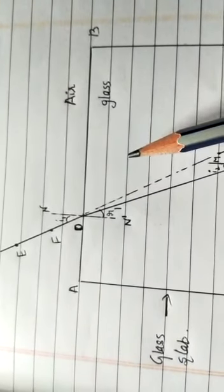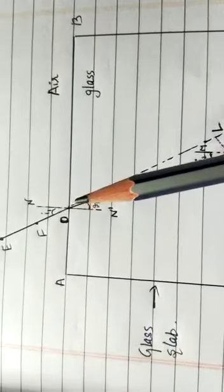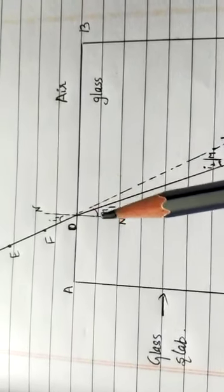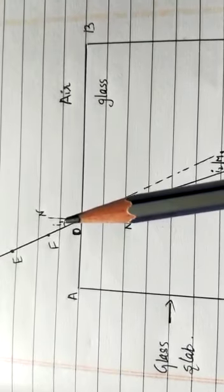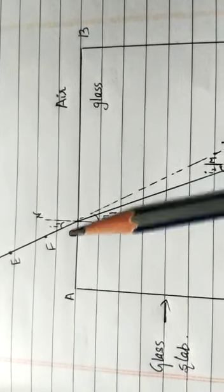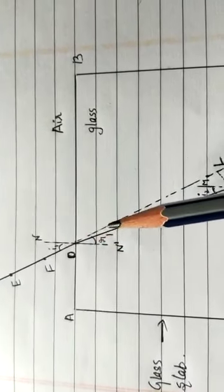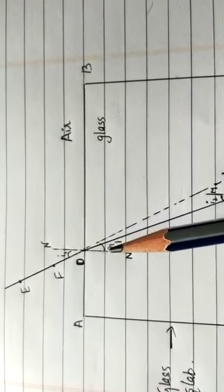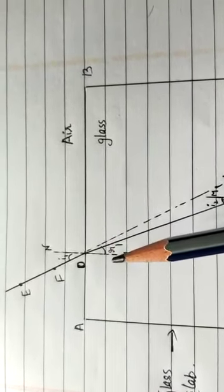The light ray at point O has entered from rarer medium to denser medium, that is from air to glass. Note that the light ray has bent towards the normal. Here, the angle of incidence is i1 and the angle of refraction is r1. In this case — air to glass, rarer to denser medium — i1 is always greater than r1, because the light ray after refraction bends towards the normal, so r1 is less.